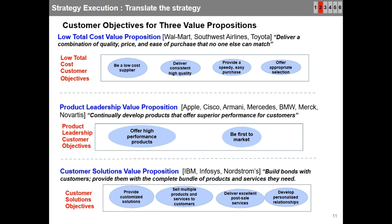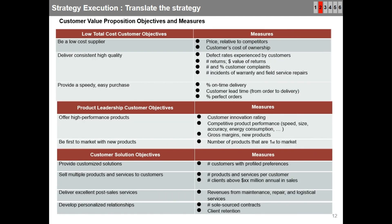What is your company's value proposition? Here is a template showing possible measures for three different value propositions. The first part shows objectives and measures for low total cost, the second for product leadership, and the third for customer solutions. Each industry has specific types of objectives and measures. You need to choose your value proposition based on your organization's strategy.